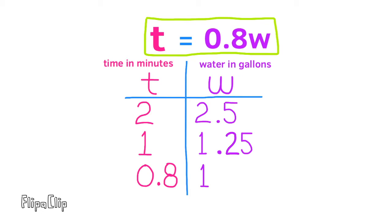One equation that shows the proportional relationship is t = 0.8w. This shows that the time in minutes, or t, depends on the number of gallons of water, or w. Multiply the number of gallons times 0.8 and it will give you the time in minutes.